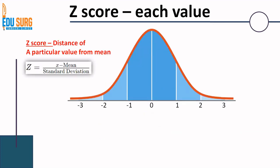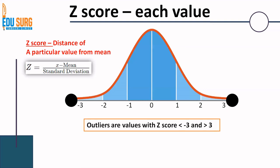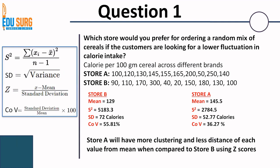Coming to Z score — we have seen Z score in the previous video but have not seen how to calculate and interpret it. Z score is basically the distance of a particular value from the mean. Variance and SD are generic — they apply to each value and come to a single result — whereas Z score can be calculated for each value in the data separately. The formula is Z = (X − mean) / standard deviation. Outliers are values with Z score less than −3 or greater than +3.